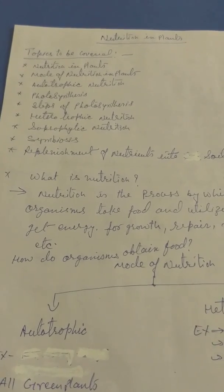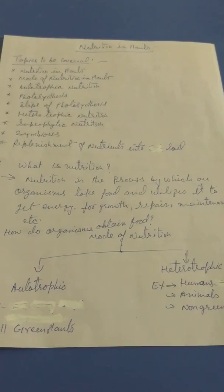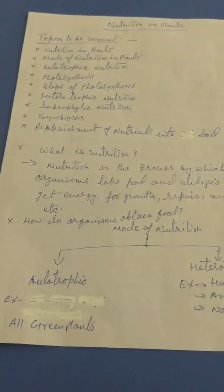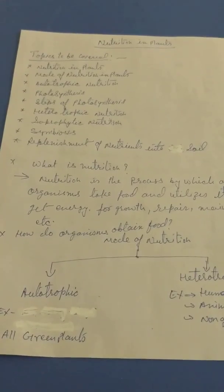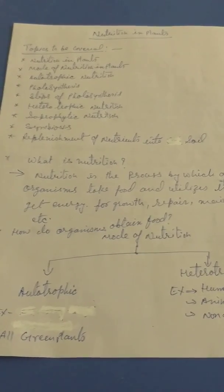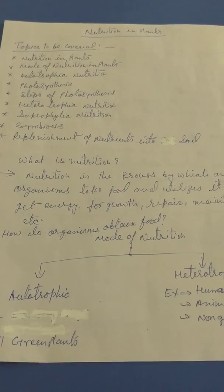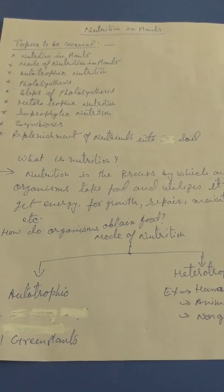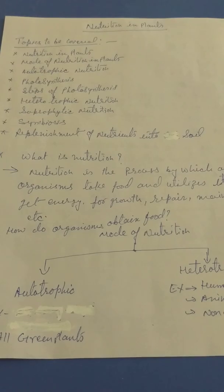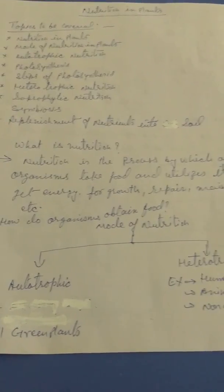In this chapter, first of all, we should know what nutrition actually is. Nutrition is the process by which an organism takes food and utilizes it to get energy for growth, repair, and maintenance, etc. We are talking about nutrition in plants. The topics to be covered in this chapter are: nutrition in plants, mode of nutrition in plants, autotrophic nutrition, photosynthesis, steps of photosynthesis, heterotrophic nutrition, saprophytic nutrition, symbiosis, and replenishment of nutrients into the soil.